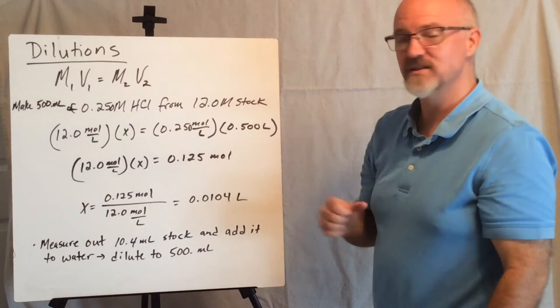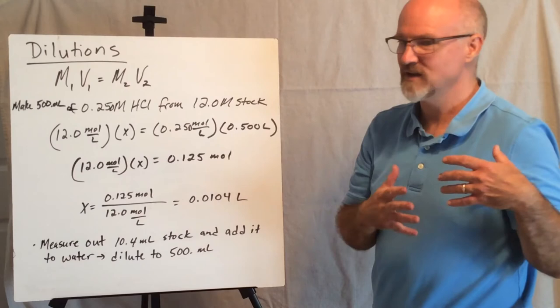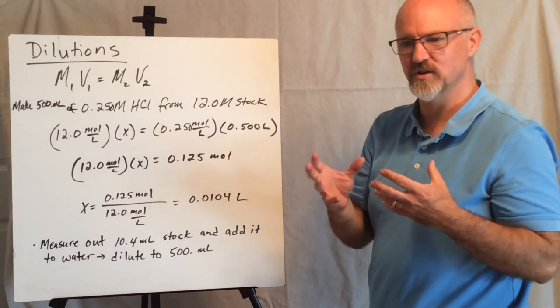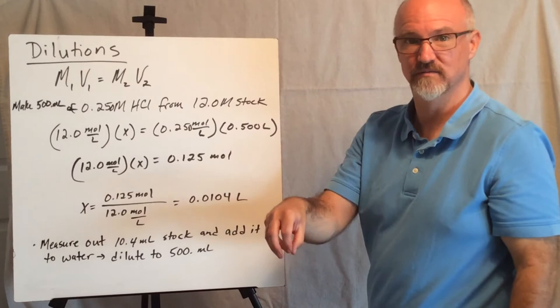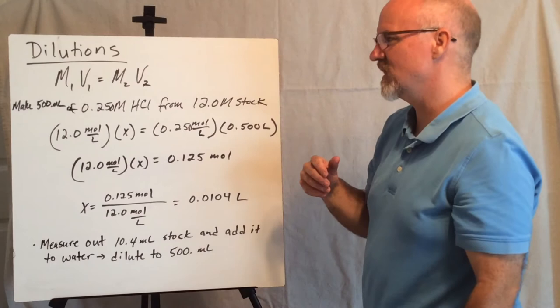So we have a nice little formula here. Molarity times volume in the initial state has to equal molarity times volume at the end. In other words, we need to know that for the concentration to change, we need to figure out where we're going, how many moles we're going to get and put into a larger volume of solvent, most of the time water.